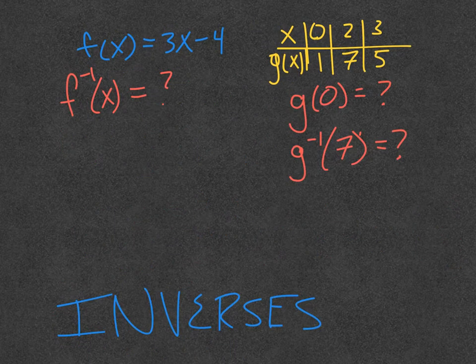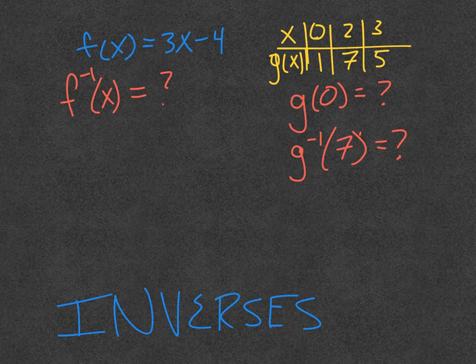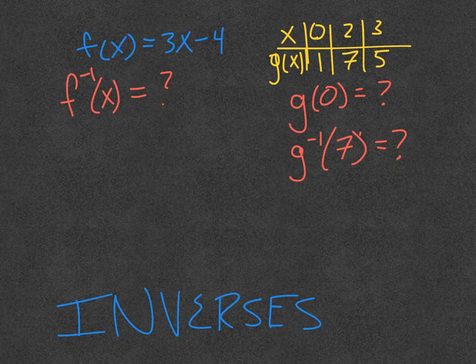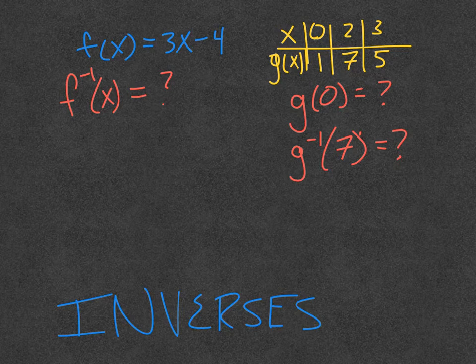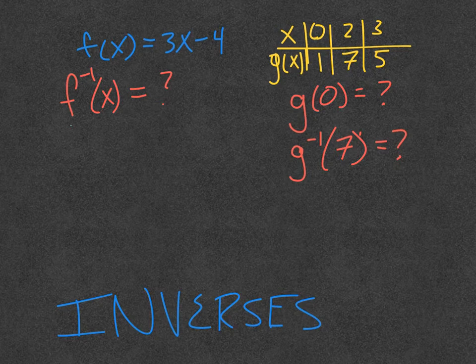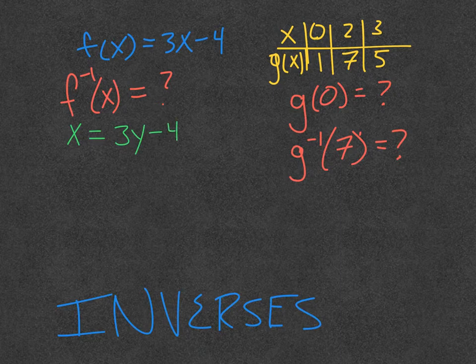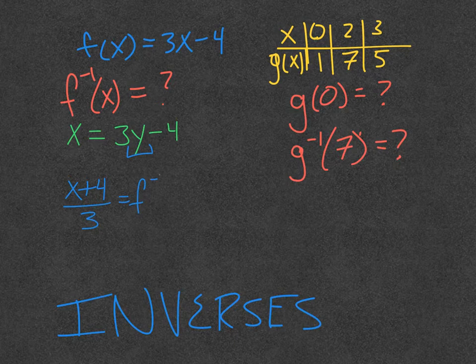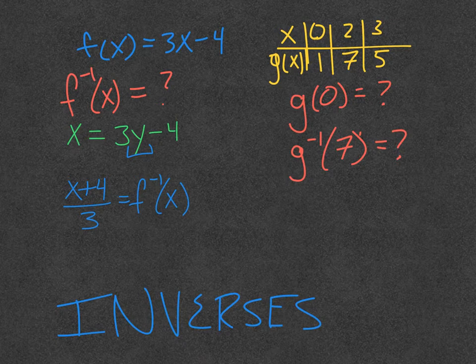And then finally, we're going to spend a minute talking about inverses. Inverses, we talked about earlier in the year, are when we have algebraically functions that undo each other. Graphically, these things are reflections over the line y equals x. And in terms of how they deal with coordinates, we switch our x and our y's. Much earlier in the year, we talked about finding an inverse for f of x by switching our x and y variables. So writing this as x equals 3y minus 4, and then getting the new y by itself. Adding 4, divided by 3, we get x plus 4 divided by 3, and that would equal f inverse of x, which is how we read this. This is not f negative 1 or f negative 1 times x. This would be called f inverse of x.